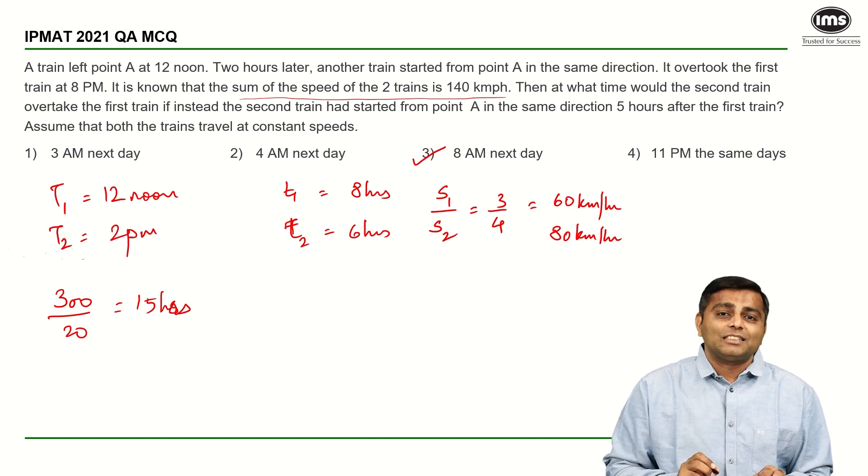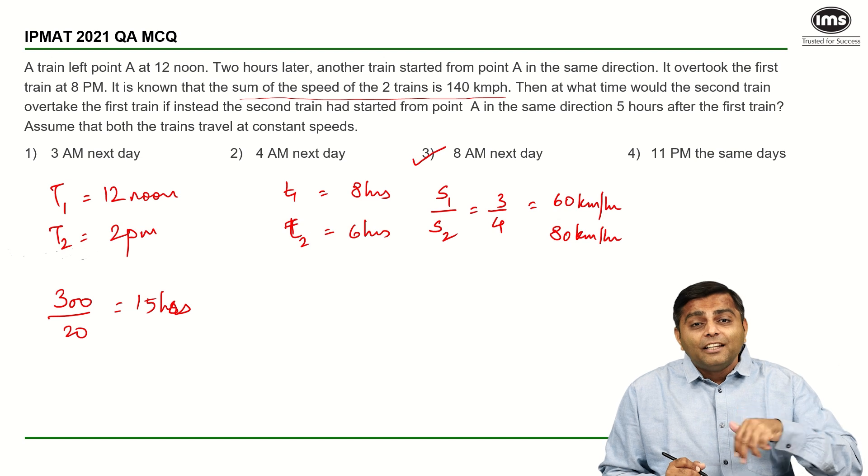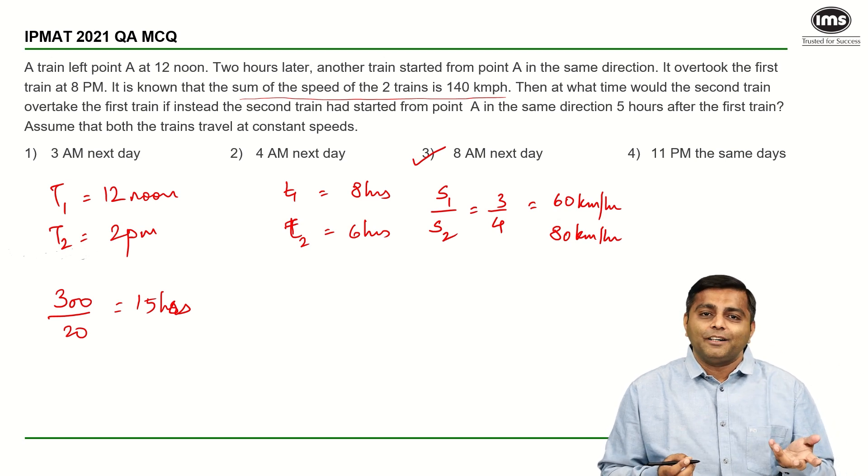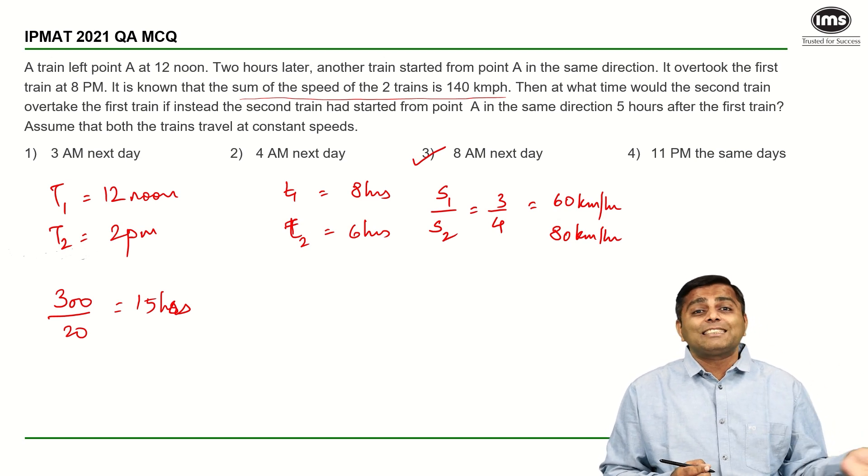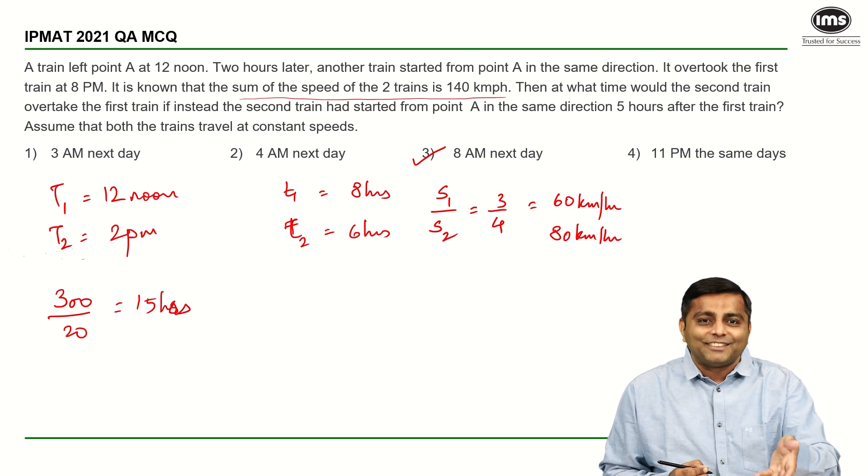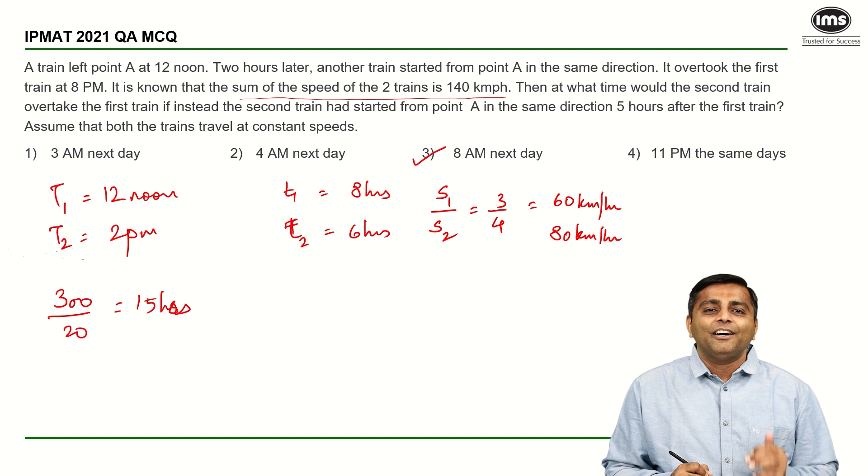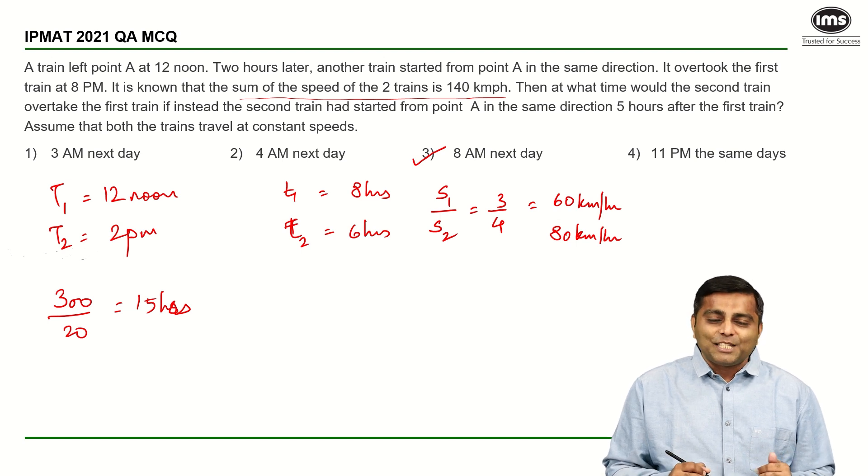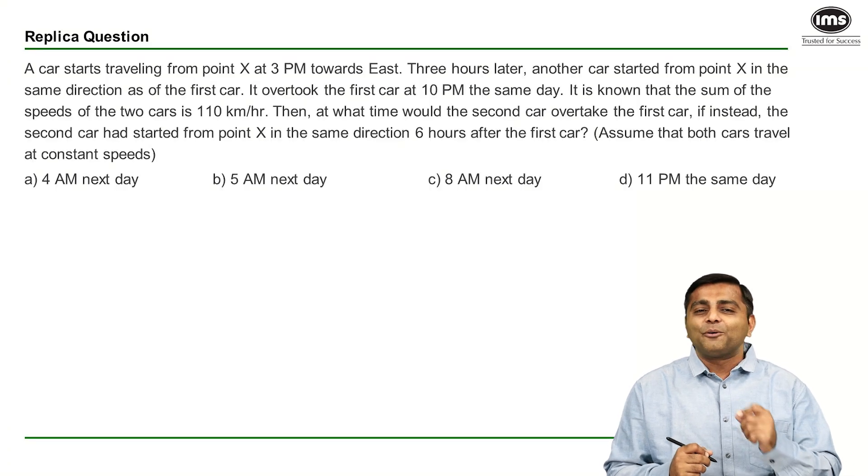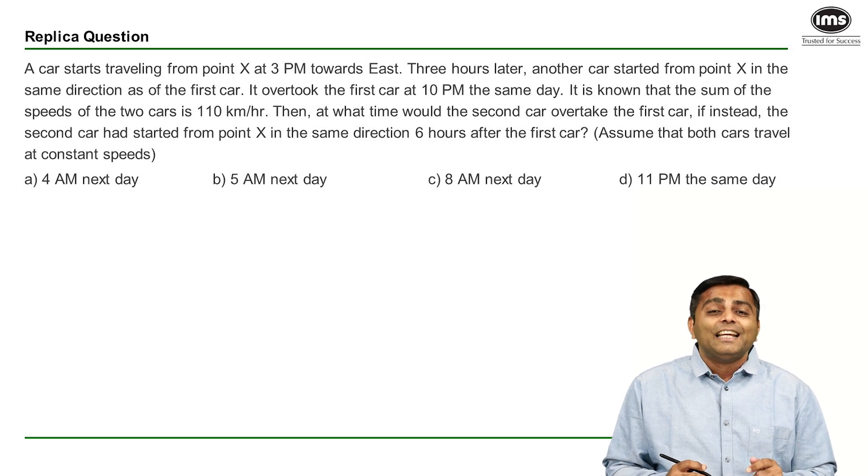The next time you see such a question, had they asked us that if the second train had started, let's say, 7 hours after the first train, you should directly say that if it is starting 7 hours after the first train, it will take 21 hours to reach the first train. So, the answer is 8 am the next day. I hope this question was clear and I really hope that you get your replica question also correct. Don't forget to put your answer in the comments. Until next time, happy learning and see you.